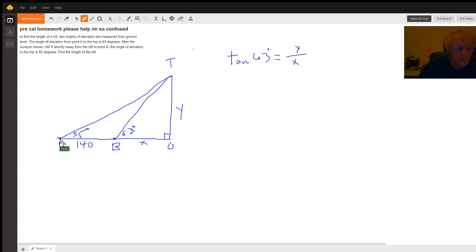And in the big triangle, triangle AOT, again a right triangle, the tangent of 55 is equal to opposite y. The distance from A to O can be represented by x plus 140. So now you have a system of two equations with two unknowns. One way to solve a system like that is a substitution method.